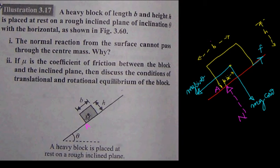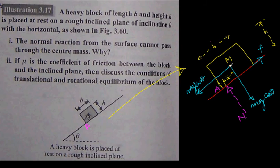First, we will draw the free body diagram — this is the fundamental thing in mechanics. I have already drawn it for you here. We have the total force MG acting downward. Taking angle theta, I have already resolved this force into its components: one is MG sine theta and another is MG cos theta.